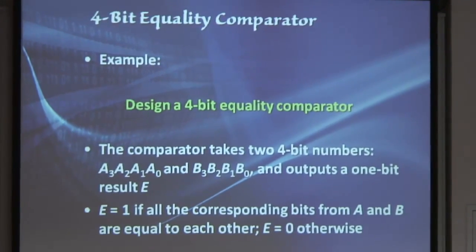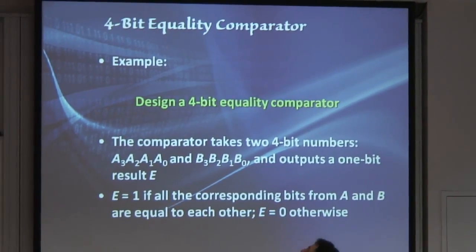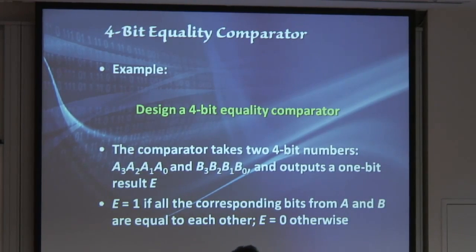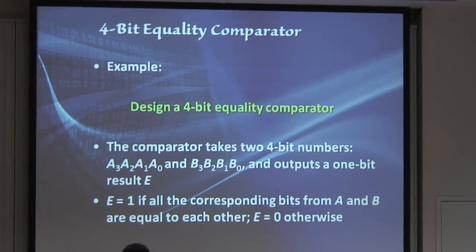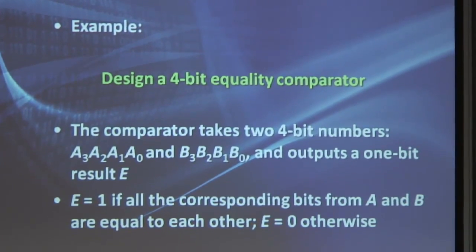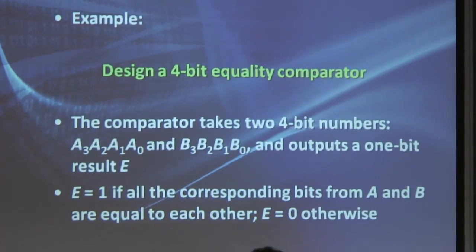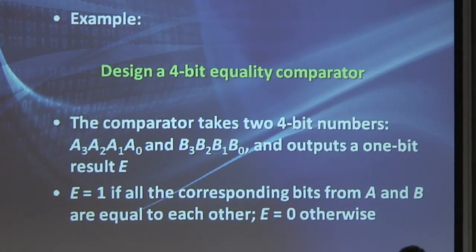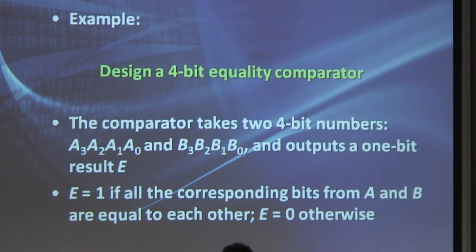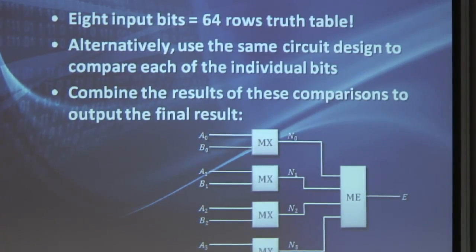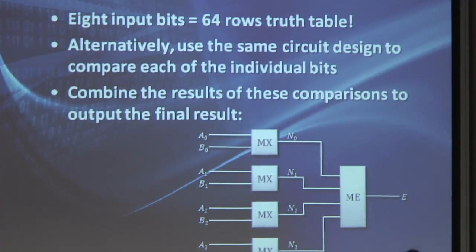Now, as an example of when such design might come in useful is if we design a 4-bit equality comparator. In this comparator, we need to take 4 bits, or two numbers of 4 bits each, A3 to A0 and B3 to B0. And then I'll output a 1 if those two numbers are equal to each other, and I'll output a 0 if they're not. One way of doing this is to draw a truth table for all the possible combinations. So we have 8 inputs because we have 4 bits for A, 4 bits for B, and we end up with 64 different rows for the truth table, which is not really what we want.